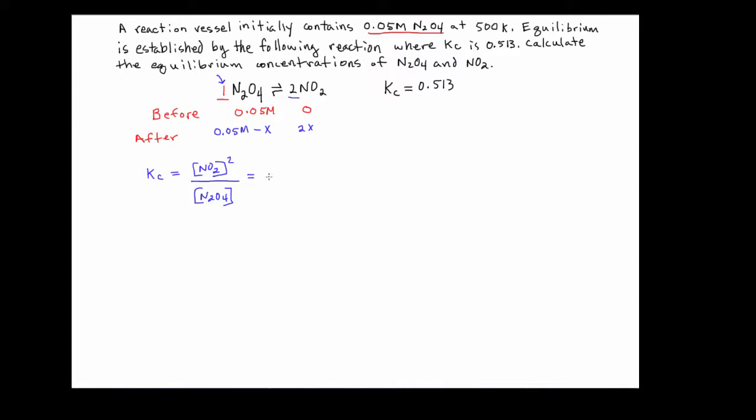Now I'm going to go ahead and insert my numbers. So the KC is 0.513. And it's worth mentioning if you've been with me through this series of videos, if you look at the KC, it's a KC that is close to 1. This value is close to 1. The significance of that is that we would expect a reaction mixture here at equilibrium to be highly mixed. There's going to be proportional amounts of both products and reactants here that are going to be comparable. That's something we can expect from this because of the size of the equilibrium constant. I'm going to go ahead and put in the information that I have for the NO2. So it's going to be 2x quantity squared. And that will be over 0.05 molar minus x.